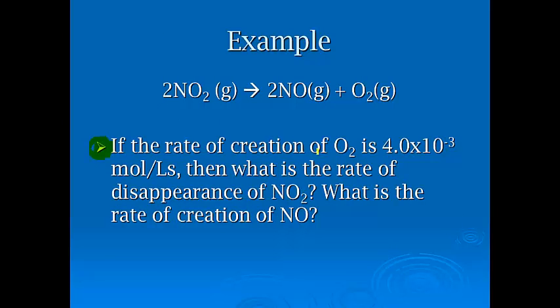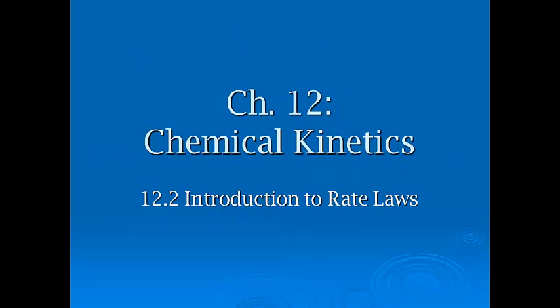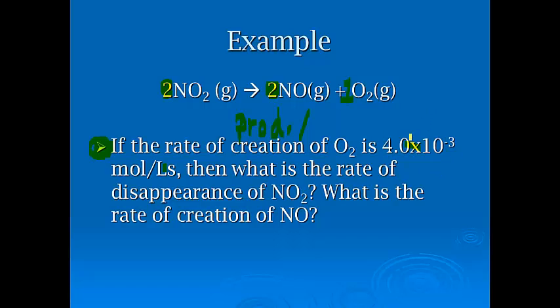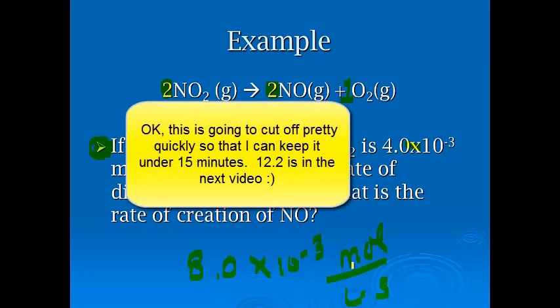So for example, the same reaction says if the rate of creation of oxygen, that's just production, is 4.0 times 10 to the negative 3rd moles per liters times seconds, then what is the rate of disappearance of nitrogen dioxide and the rate of creation of nitrogen monoxide? We've got 1 to 2 to 2, meaning that they both have 2s and that's a 1. So how do we do that? All we have to do is multiply this by 2. If we just keep it positive for both of them, we're going to multiply that by 2 and get 8.0 times 10 to the negative 3rd moles over liters times seconds.